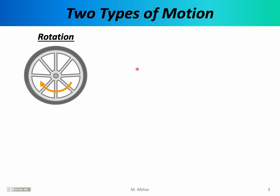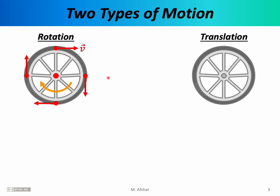We can summarize by saying that there are two types of motion. One type is pure rotational motion: different points on the wheel have different velocity vectors, and each one executes circular motion relative to the center. The second type is pure translational motion, in which different points on the wheel have the same velocity vector. This is what you'd have if the bicycle wheel were skidding on a wet slippery surface after locking the brakes — every point, including the center and points on the rim, would have exactly the same velocity vector.